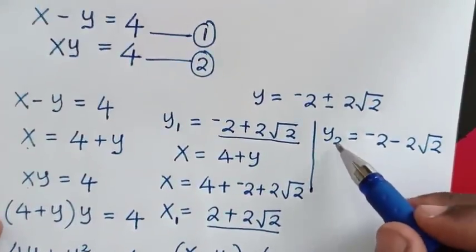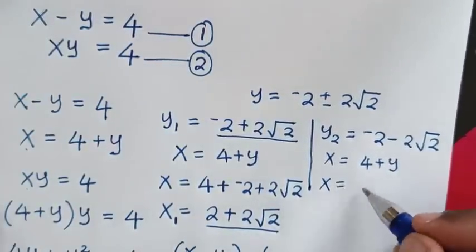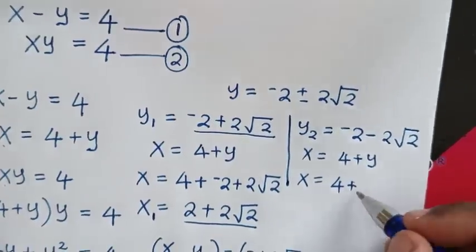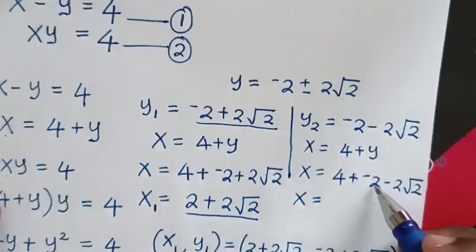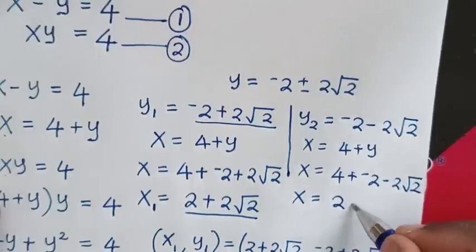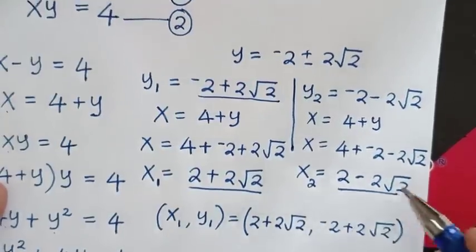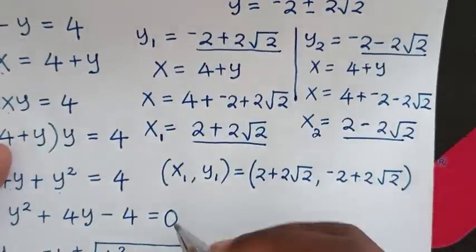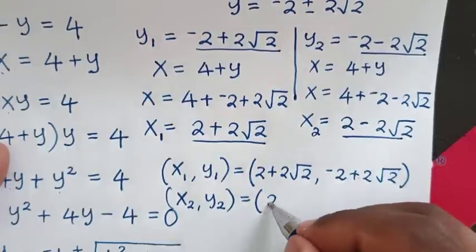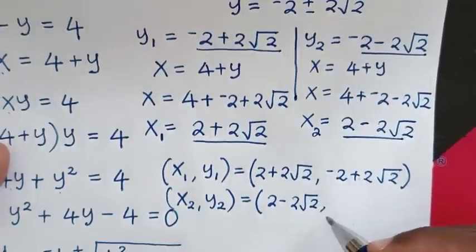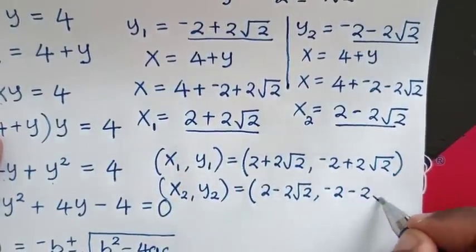For the second solution, from x is equal to 4 plus y, substituting y2 which is negative 2 minus 2 square root of 2: x is equal to 4 plus negative 2 minus 2 square root of 2, which is 4 minus 2 minus 2 square root of 2, giving x2 is equal to 2 minus 2 square root of 2. So the second solution is x2 comma y2 equals 2 minus 2 square root of 2 comma negative 2 minus 2 square root of 2.